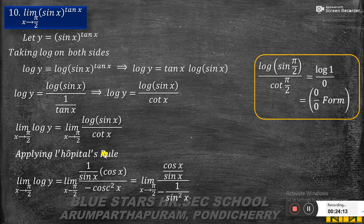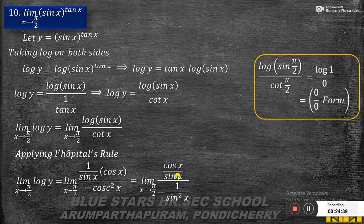Applying L'Hôpital's rule: differentiating numerator log(sin x) gives (1/sin x)·cos x = cos x/sin x. Differentiating denominator cot x gives minus cosec² x. So we get (cos x/sin x) by (−cosec² x), which equals (cos x/sin x) times (−sin² x) = −sin x · cos x.